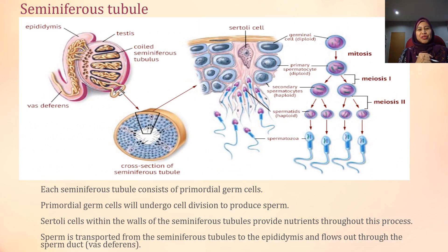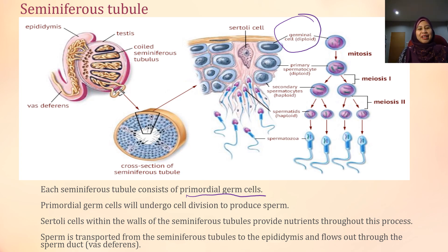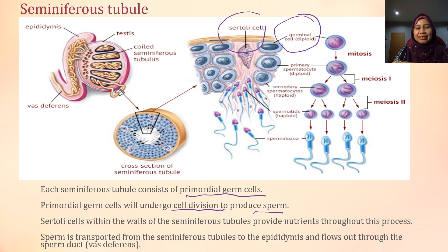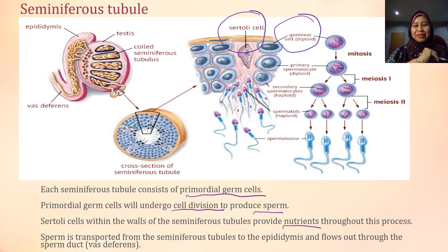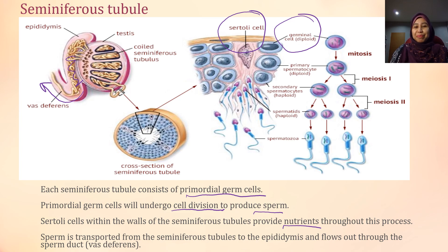Each seminiferous tubule consists of primordial germ cells, or in the Form 5 textbook, germinal epithelial cells. This primordial germ cell will undergo cell division to produce sperm. The Sertoli cell, which is within the walls of the seminiferous tubules, will provide nutrients throughout the process. Sperm is then transported from the seminiferous tubules via the vas deferens, or sperm duct.